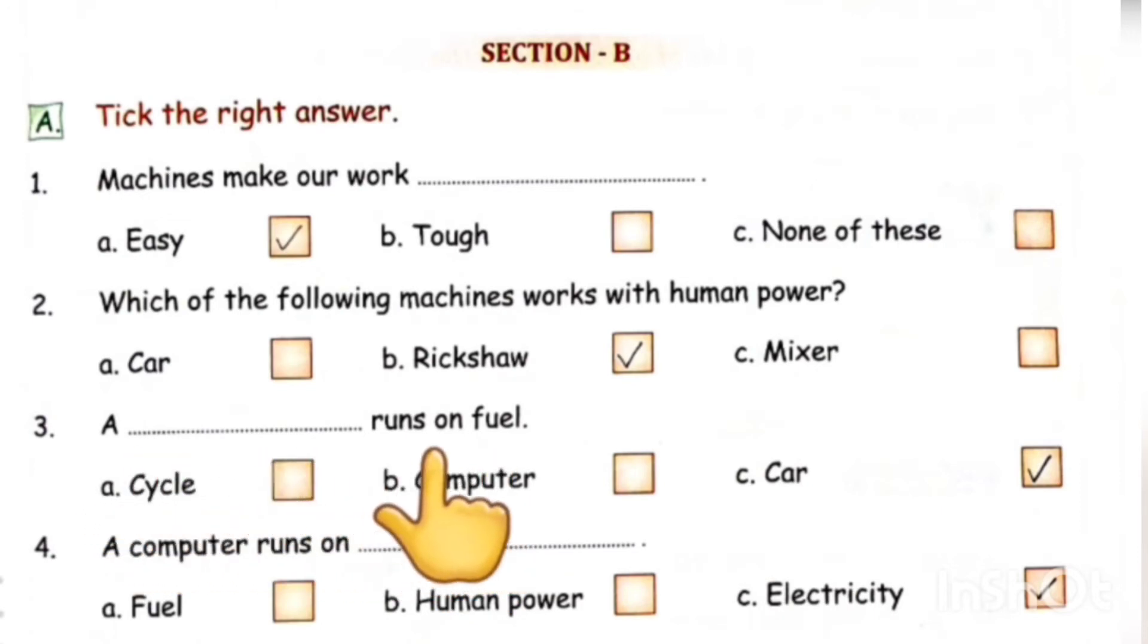Now, let's read the next question. A computer runs on. Computer ki de te chalde lehi? Option A, fuel. Option B, human power. Option C, electricity. Correct option A, electricity.